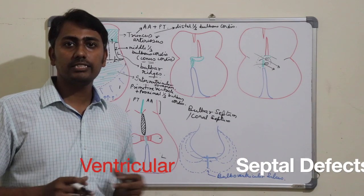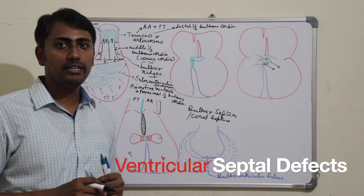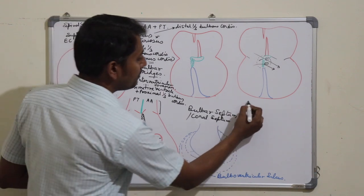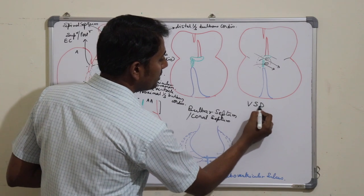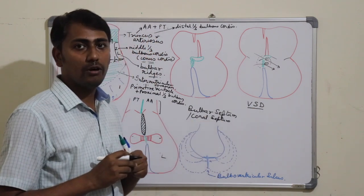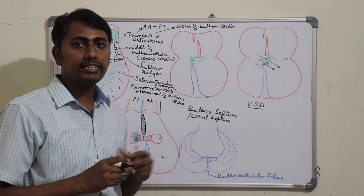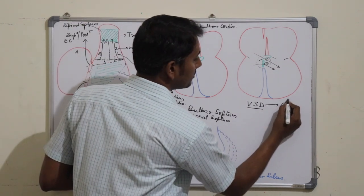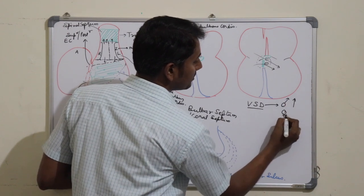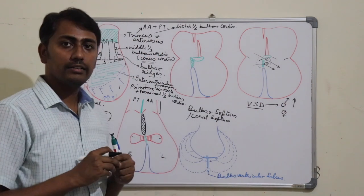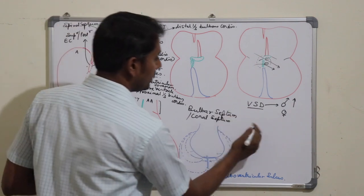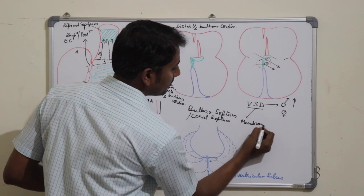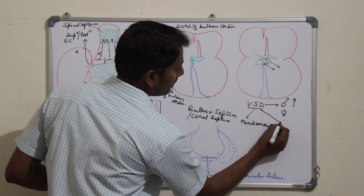We will discuss the ventricular septal defect based on the development of the interventricular septum. Ventricular septal defects are the most common type of congenital heart defects and occur more frequently in males as compared to females. There are two types: the membranous type and the muscular type.